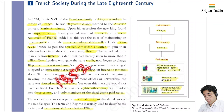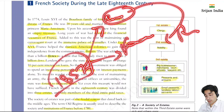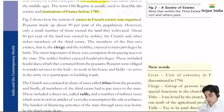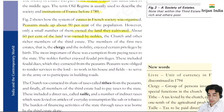Peasants were obliged to render services - working in their homes, building roads, participating in army service, etc. The Church extracted its share of taxes called tithe from the peasants. The Church - which is religion-related - was also collecting taxes from peasants. Finally, all members of the third estate had to pay taxes to the state. The direct tax was called taille, and there were also a number of indirect taxes levied on articles of everyday consumption like salt and tobacco.